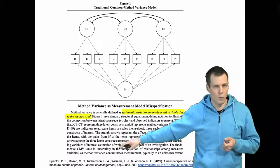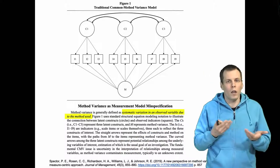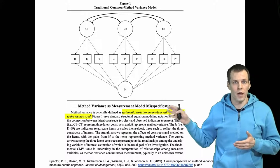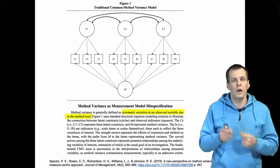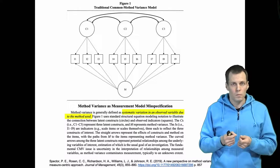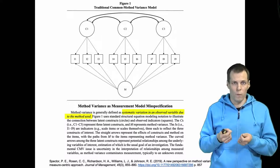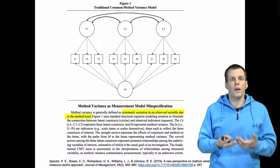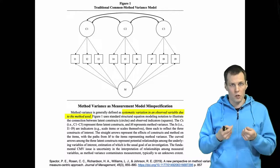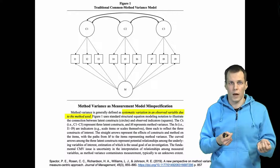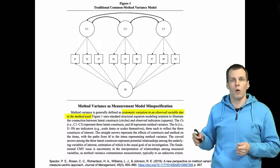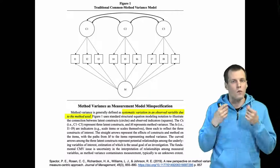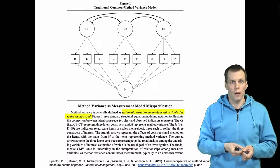This article by Spector and other work he has written about method variance is very useful for understanding the limitations and how to do more thoughtful modeling of measurement effects. This is a commonly used technique so it is important to understand the drawbacks of this family of techniques that apply a single factor, in order to review work done using these techniques.